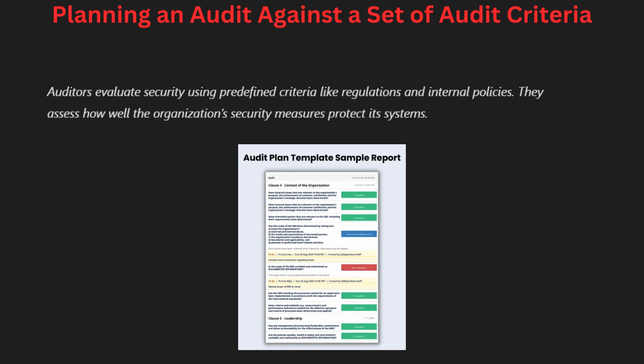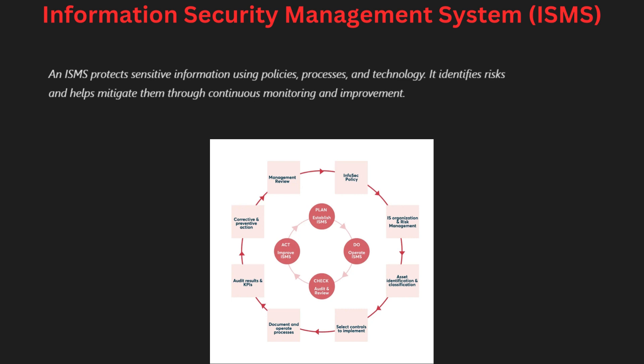An Information Security Management System, or ISMS, is a systematic approach to managing sensitive company information. It involves people, processes and technology to protect information assets. An ISMS helps organizations identify and assess risks to their information, and by implementing policies and controls they can mitigate these risks effectively.